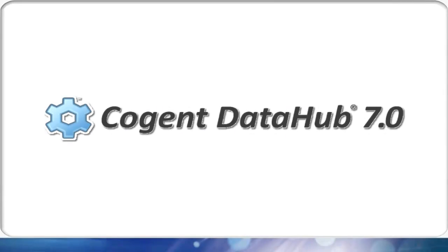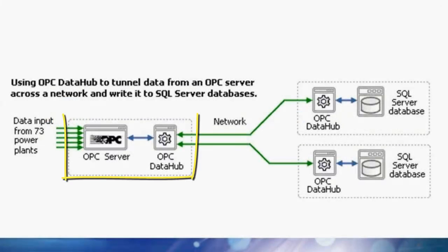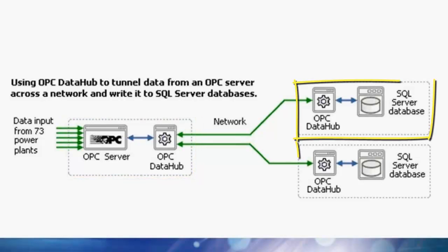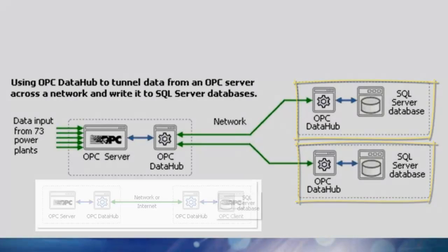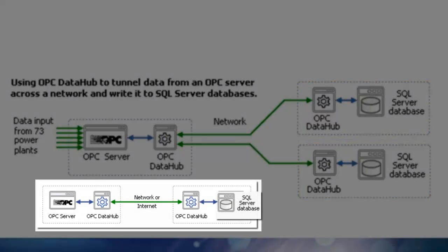So they decided to try the Data Hub. They installed the Data Hub on the OPC server machine and configured it to read from the OPC server. Next, they installed one Data Hub on each of the database servers and used the tunneling function to transfer data securely across the network without any DCOM.